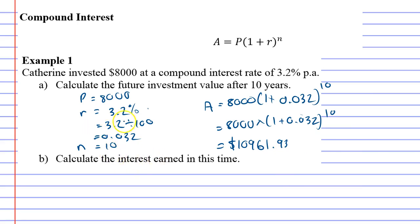Notice this is a little different because this is the future value. What this is telling you is that after 10 years, your $8,000 will now be worth $10,961.93. It shows you how much money you've got at the end of 10 years.